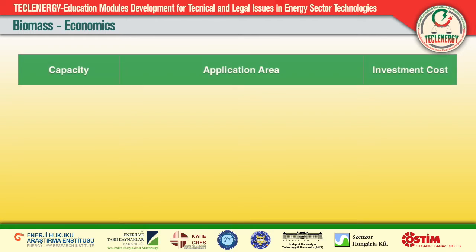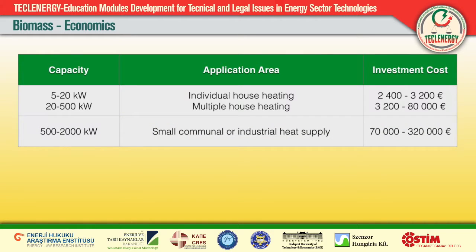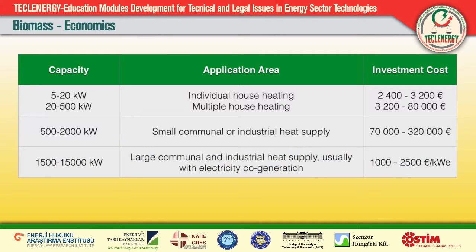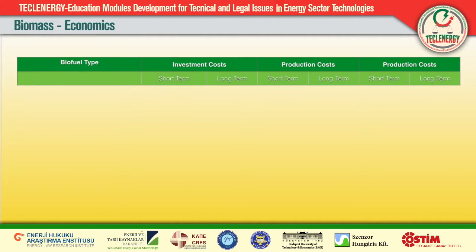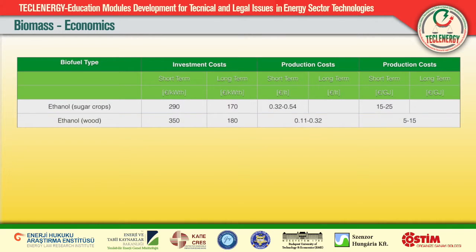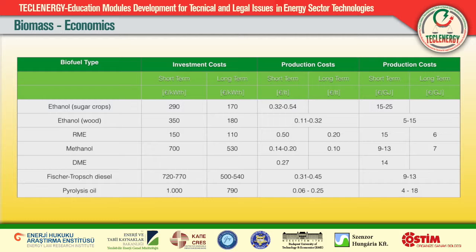For heat generation, the status of development of relevant technologies is mostly commercially available. On the basis of increasing capacity range, heat production plants can be used for heating of individual and multiple houses and for producing small communal and industrial heat supply. The average specific investment cost is between 150 and 200 euros per kilowatt; for the smallest units it can be even higher. For large communal and industrial heat supply systems and power stations, the specific investment cost is between 1,000 and 2,500 euros per kilowatt. For liquid biofuels, the initial investment of a bioethanol plant is lower if it uses sugar crops as feedstock instead of wood, because the process requires fewer production steps.